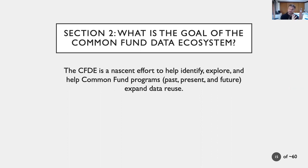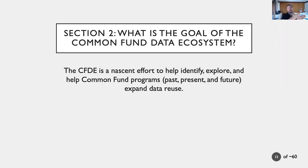Now I want to tell you about what it is we're doing. The Common Fund Data Ecosystem is a nascent effort — less than two years old. Our goal is to help identify, explore, and help these Common Fund programs — past, present, and future — expand the reusability and actual data reuse of the data they generate. This is an increasing mandate of the Common Fund. HubMap has an explicit goal of producing data for all, and as the Common Fund evolves, data reuse is becoming a bigger and bigger part.